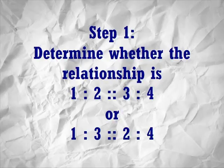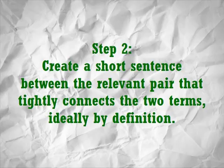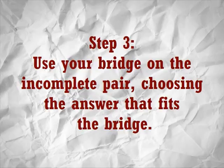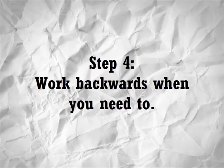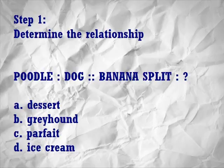Step 1: Determine whether the relationship is 1-2-3-4 or 1-3-2-4. Step 2: Create a short sentence or bridge between the relevant pair that tightly connects the two terms, ideally by definition. Step 3: Use your bridge on the incomplete pair, choosing the answer that fits the bridge. Step 4: Work backwards when you need to. Now let's see how to apply the four steps.